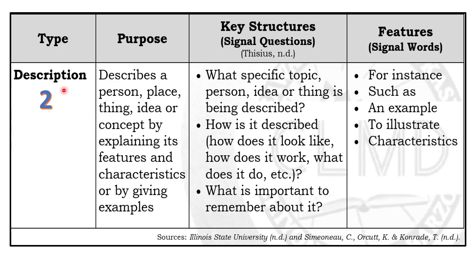The next type of informational or factual text is Description. Its purpose is to describe a person, place, thing, idea, or concept by explaining its features and characteristics, or by giving examples.